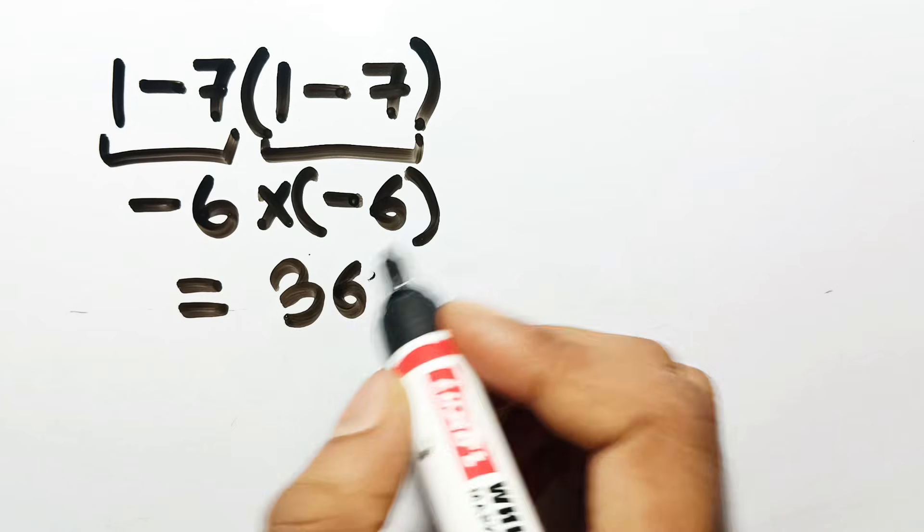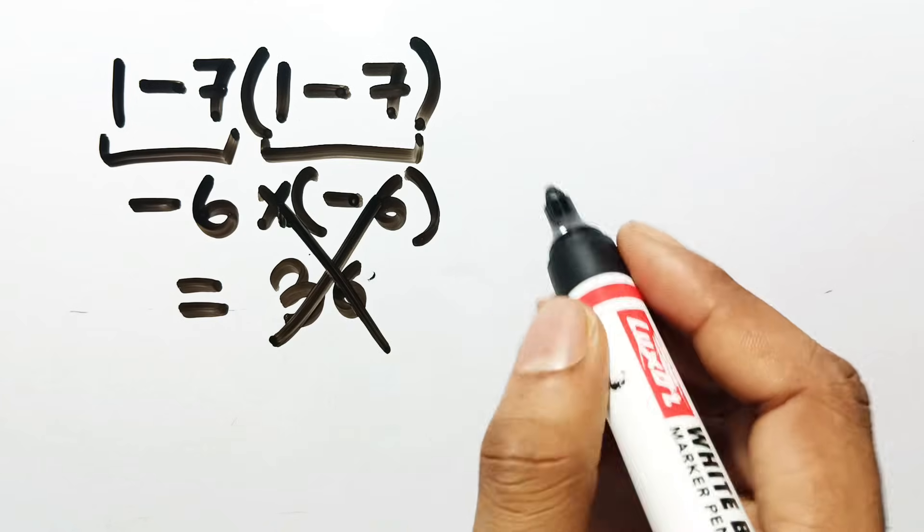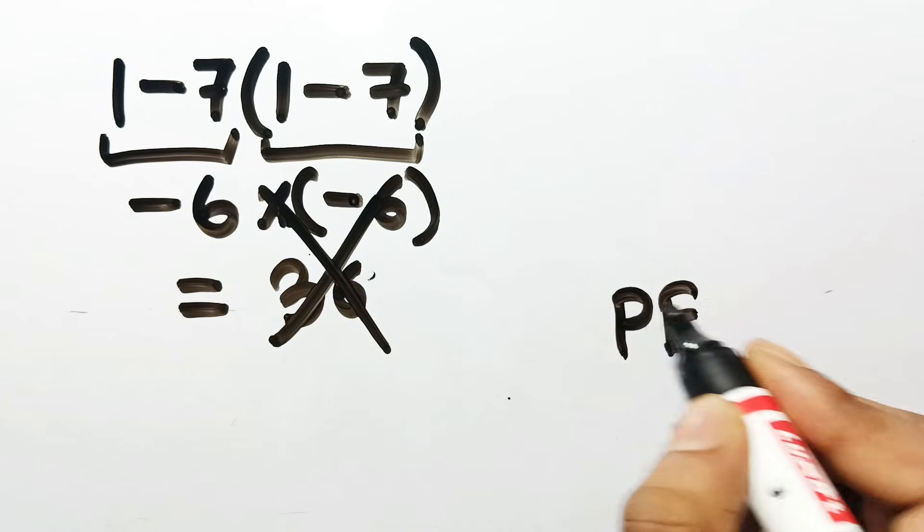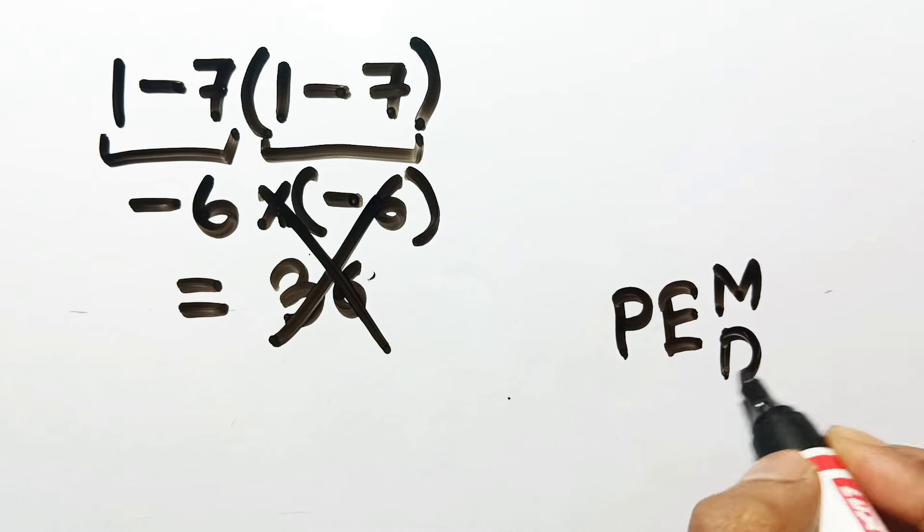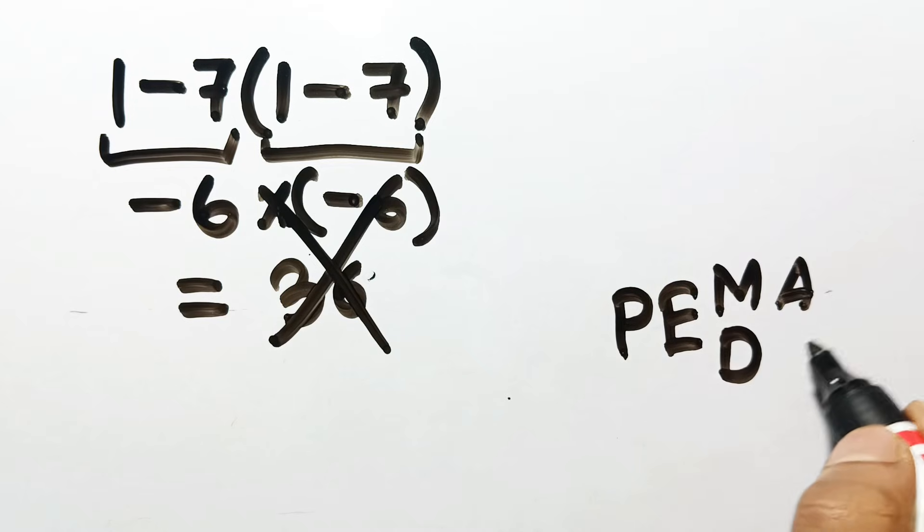But this answer is not correct, because according to the order of operations, first we have to do parentheses, then exponents, then multiplication or division, and finally addition or subtraction.